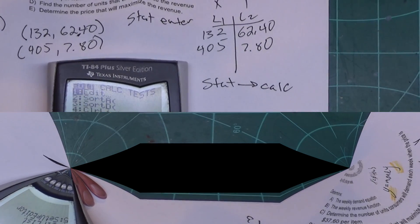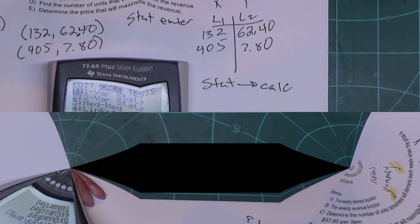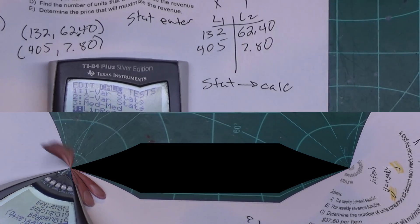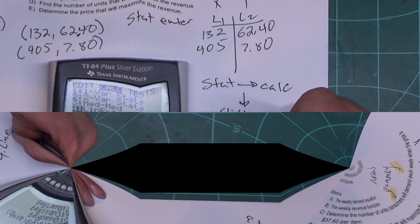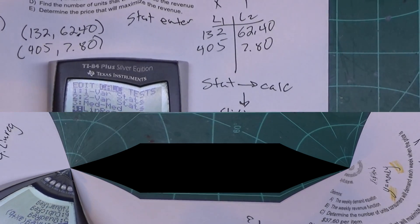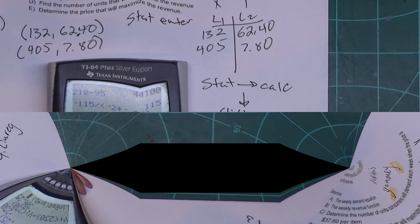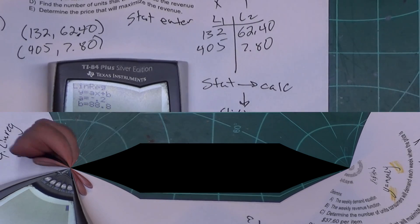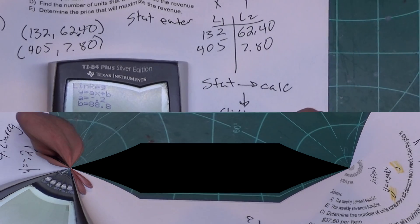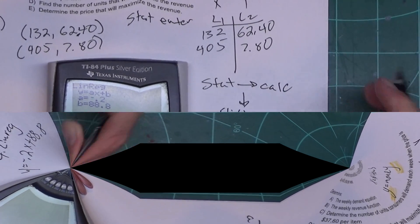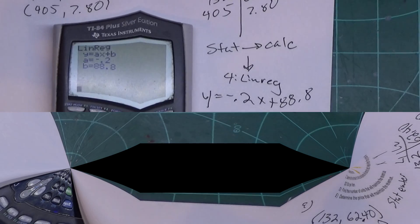Calc, so I'll push the stat button over to calc. And then if you look, number 4 says linreg, so that's what we want to go to. Number 4 for linreg, that stands for linear regression. It's a way of finding lines and curves based on a set of points. And the calculator is built in, why not abuse it? So I get y equals negative 0.2x plus 88.8.